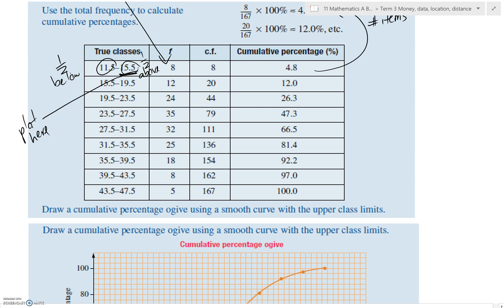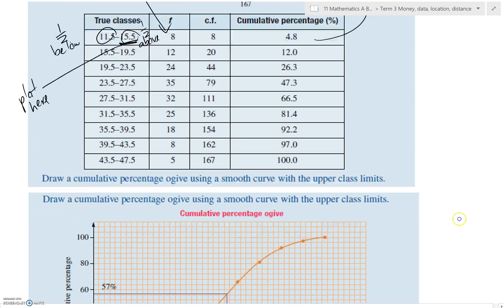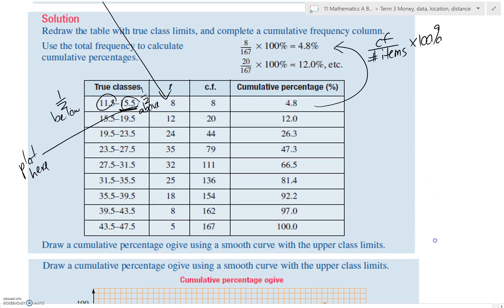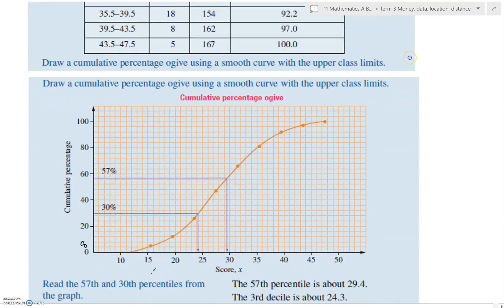And cumulative percentage is what you see at the top of that class. So that's why we use the upper class limit. So the first one is 15.5 upper class limit and the cumulative percentage is 4.8.